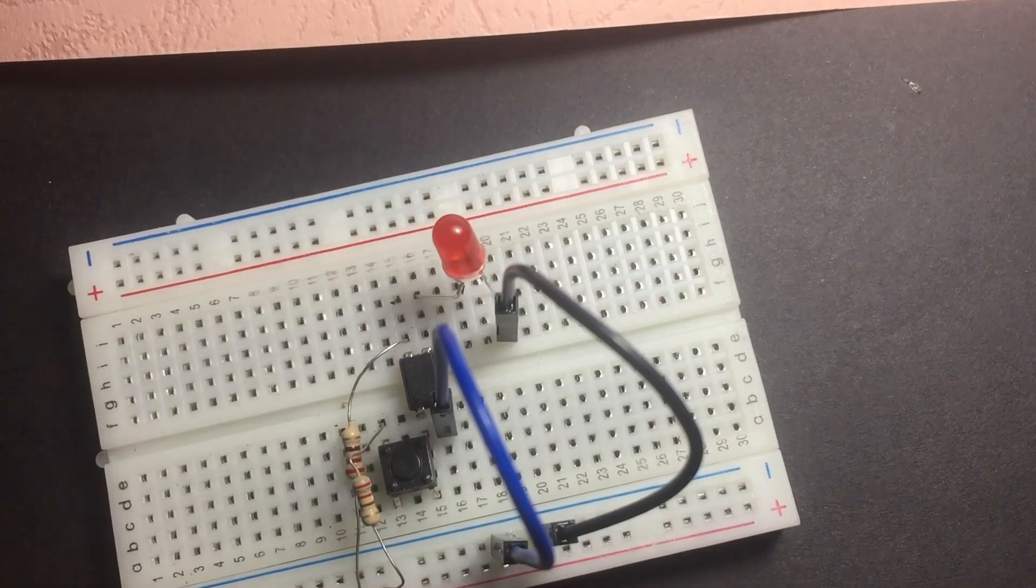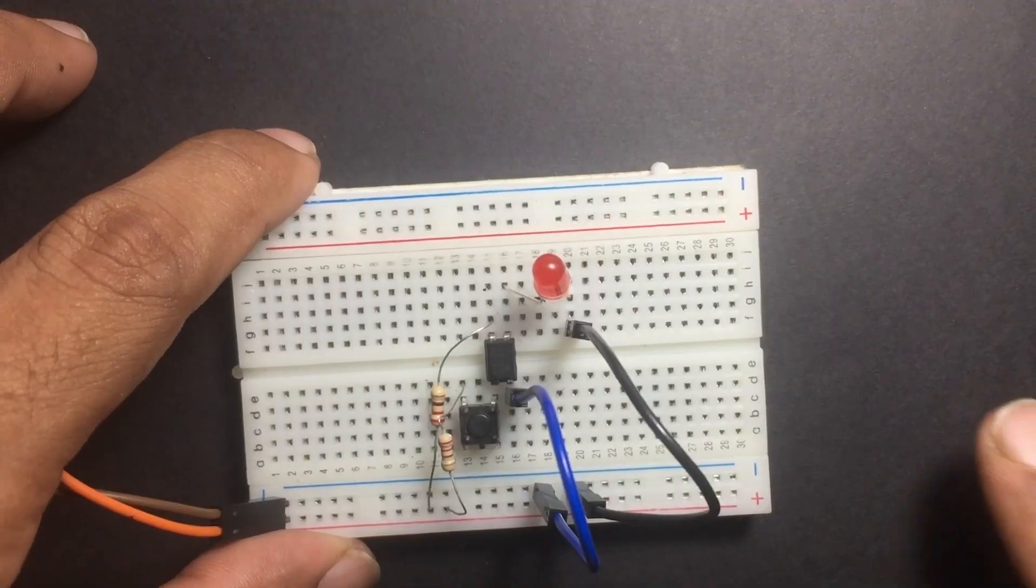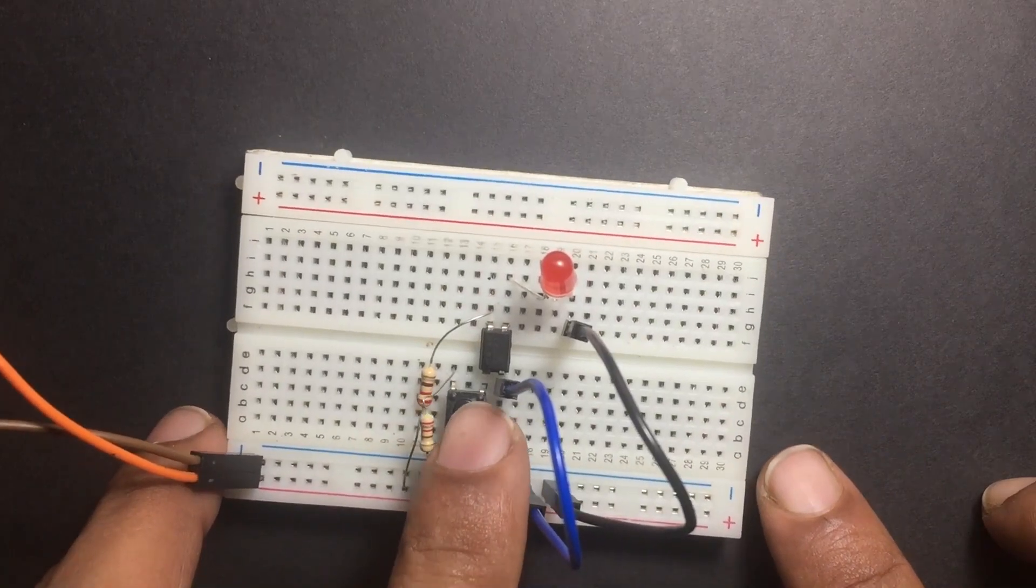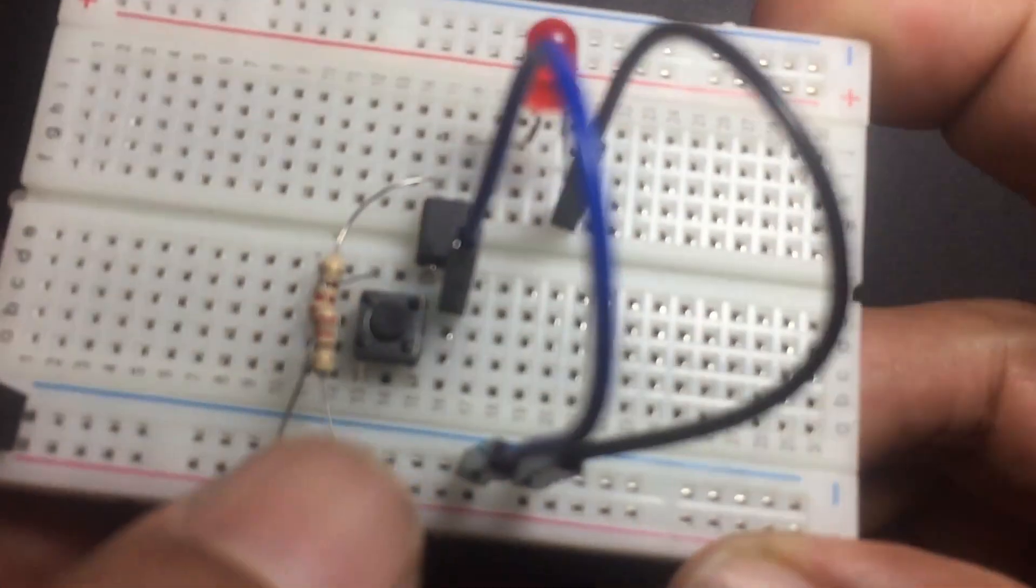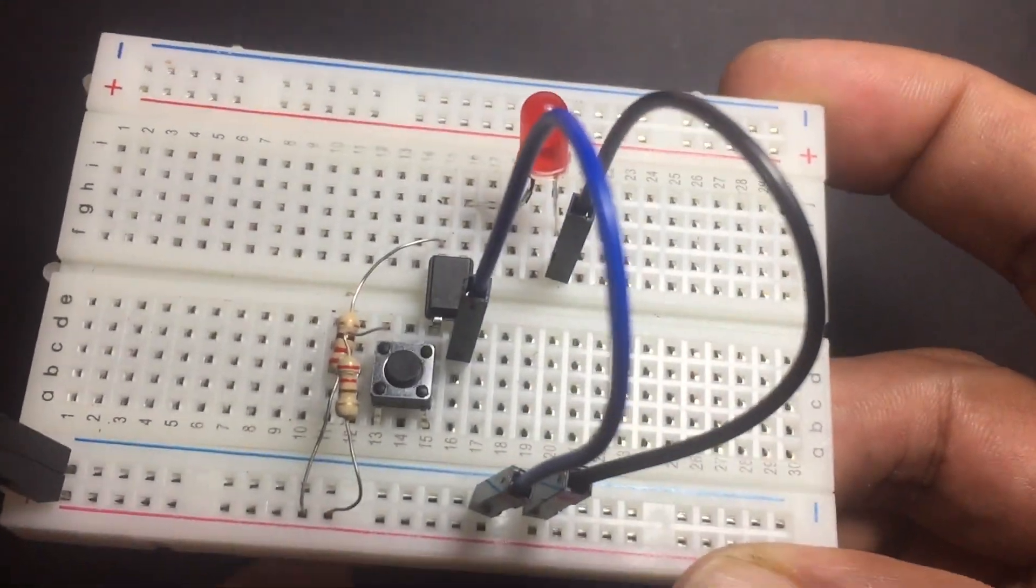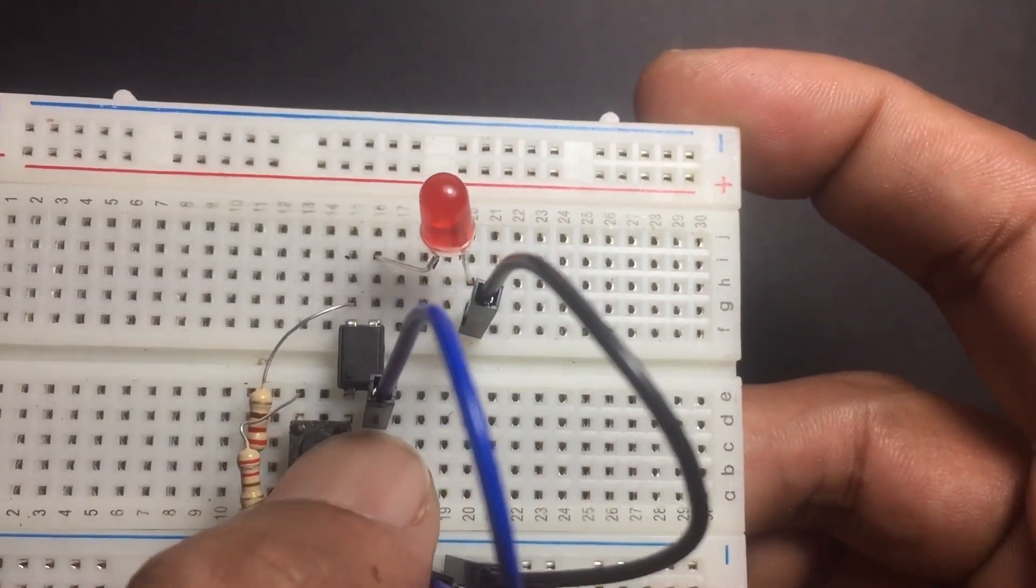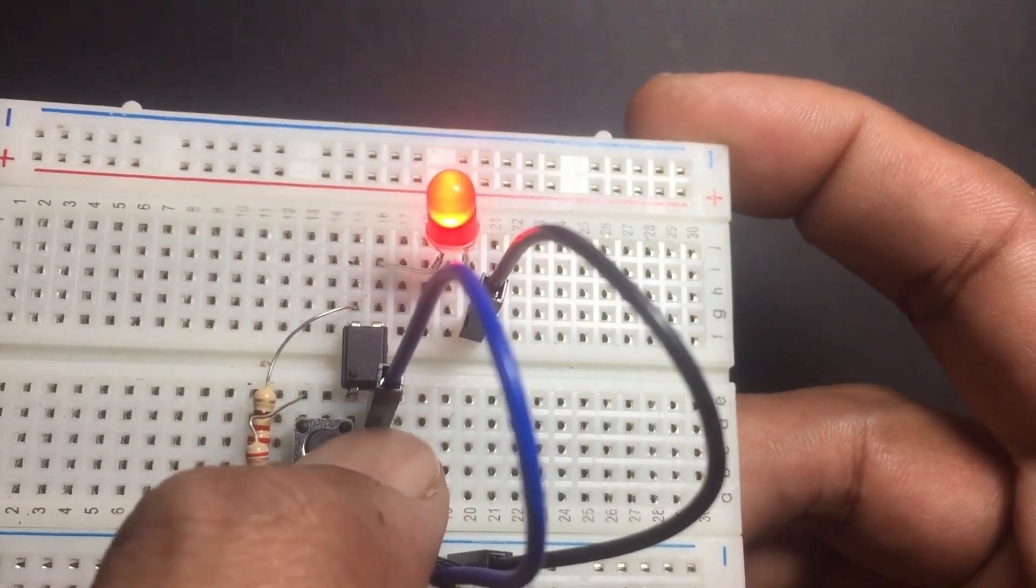Now the wiring part is over. You can check the optocoupler by pressing the switch. This same circuit can be used to check the optocouplers as well. I hope this tutorial will help you to understand the way of working optocouplers.